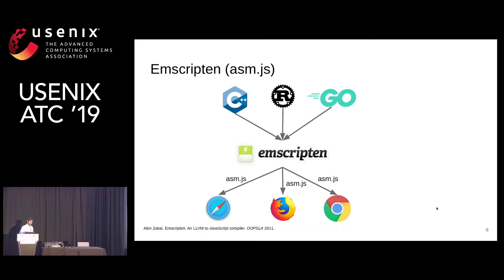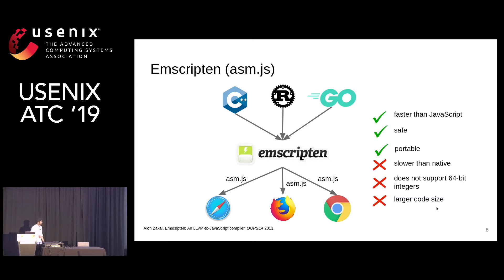In 2011, another technology came out known as Emscripten, which would take these native languages and compile them down to a subset of JavaScript known as asm.js. That asm.js is faster than JavaScript because it uses type annotations to get away with dynamic checks of JavaScript. It is safe and portable. Unfortunately, it was slower than native, and since JavaScript does not have 64-bit integers, asm.js also does not support them.